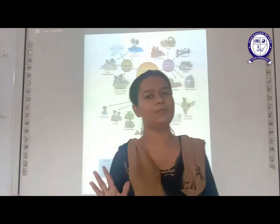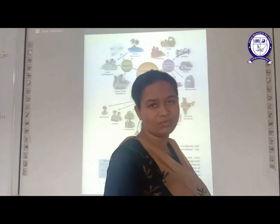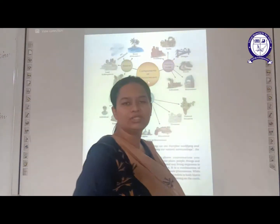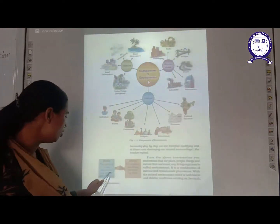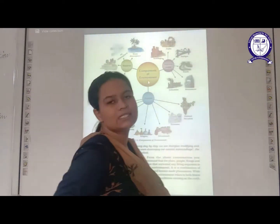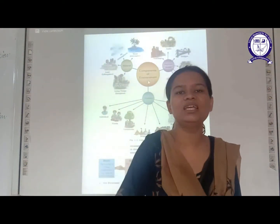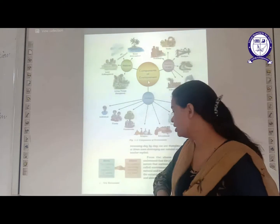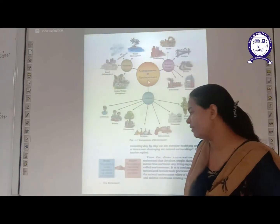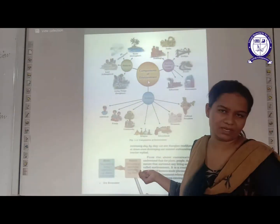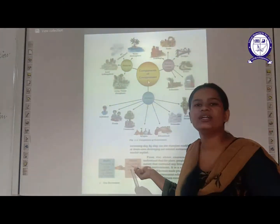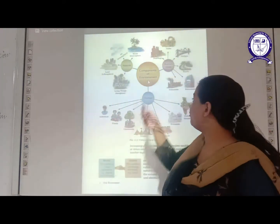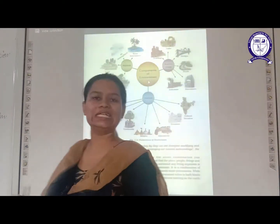These are biotic elements and abiotic elements. Biotic environment refers to living organisms — all the living things together form biotic environment. For example, plants, animals, human beings. On the other hand, abiotic environment refers to non-living elements. For example, land, buildings, bridges. We have already discussed these points, so I hope it is clear. Now let us move ahead.